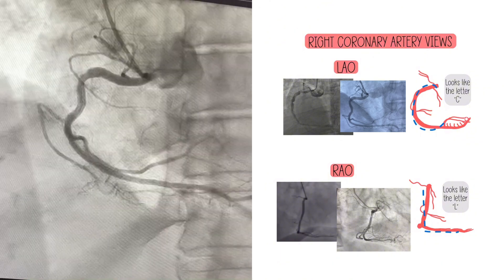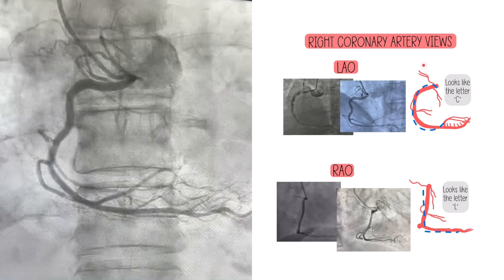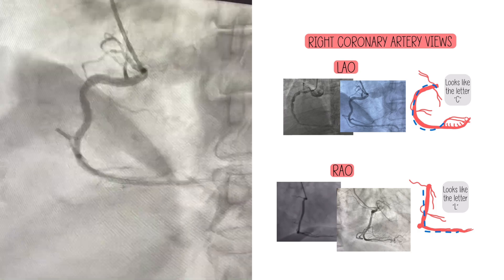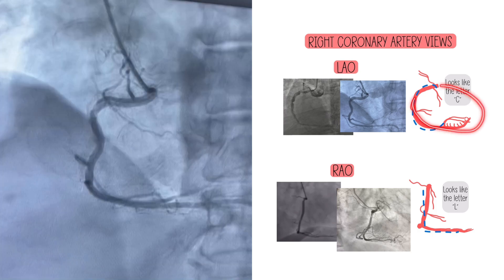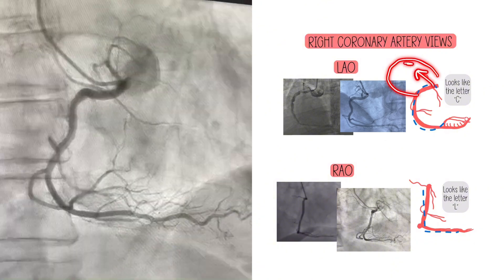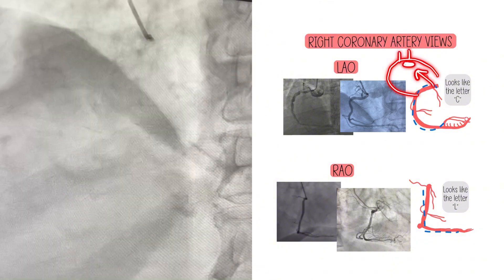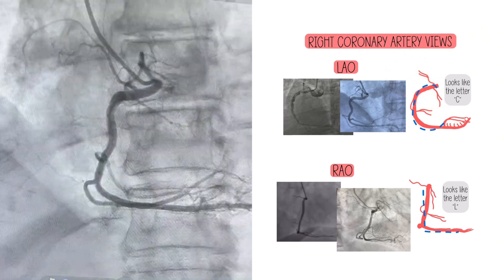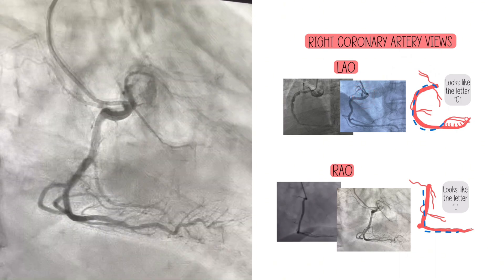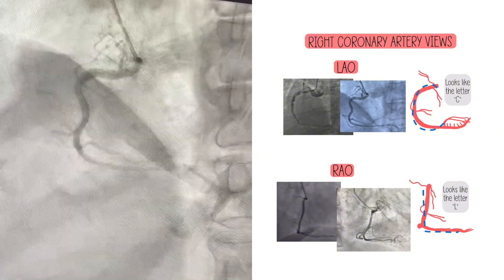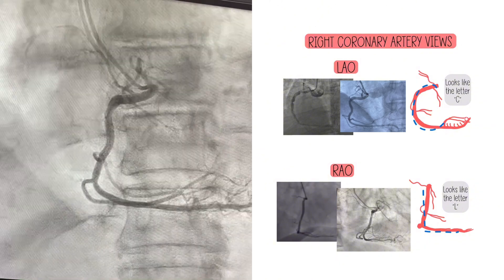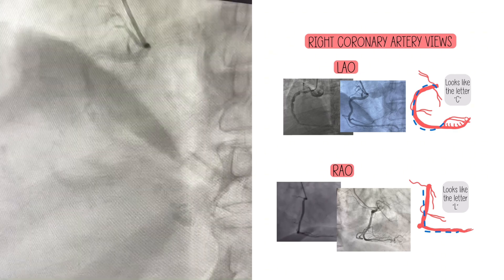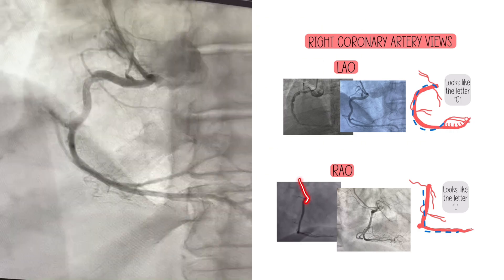Here we can practice the RCA anatomy we learned — the SA nodal branch and the conus. The difference between them is directionality: the conus goes toward the right ventricle, while the SA nodal goes in the opposite direction because the SA node is in the right atrium up by the SVC. You can see two different vessels in the proximal segment in some images, but not all of them. Sometimes the conus has an anomalous takeoff with its own ostium.